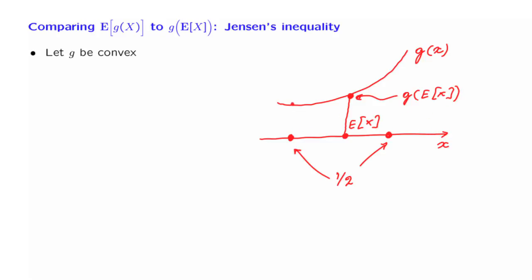Since x takes two values with equal probability, the expected value is going to be in the middle. The random variable g of x will take each of the two corresponding values with probability 1/2. The expected value of g of x is going to be 1/2 of this value plus 1/2 of that value, which you can find by drawing a straight line between the two points. And we see that in this example, the expected value of g of x is above the value of g evaluated at the expected value of x.